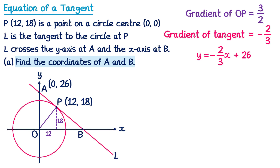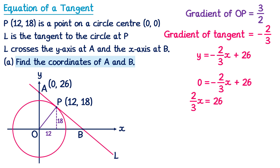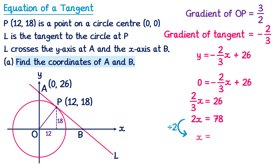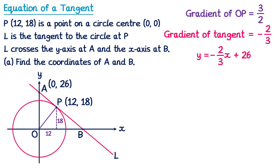Now we'll find the coordinates of B. B is on the X axis, so Y equals 0. Substituting into the equation: 0 equals negative 2 thirds X plus 26. Adding 2 thirds X to both sides gives 2 thirds X equals 26. Multiplying both sides by 3, the 3s cancel on the left giving 2X, and on the right 26 times 3 is 78. Then dividing both sides by 2 gives X equals 39. So the coordinates of B must be (39, 0).